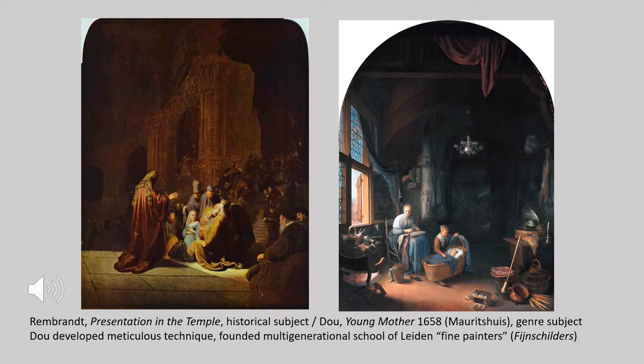Gerard Dou went on to found a dynasty of painters, succeeded by his own pupil Frans van Mieris and several generations of the van Mieris family, who made Leiden a center for genre subjects in a particularly meticulous style. He got his start with Rembrandt doing history paintings but, like Nicholas Maes, transferred those skills to scenes of contemporary life. Dou's dominance of the Leiden market to establish a particular style for which that city became known is typical of smaller artistic communities in the Netherlands, where one dominant style or artist becomes synonymous with a place.